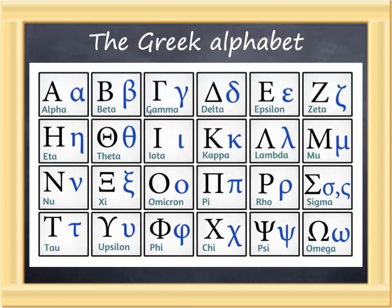Mu, one of those letters that looks very different in its lowercase form, is the M sound, as in mother. Nu, often confused with the English V, is like the N in nu. Xi is another letter that requires two English letters to make the sound — K-S, sort of like the X in axiom. Omicron is the short O sound, as in knot.